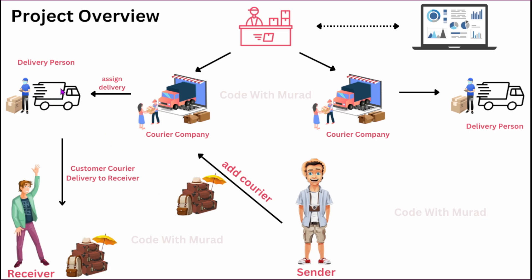When the delivery person delivers the courier to the receiver, they update the status to 'Delivered'. The admin will be able to see the complete details about courier, delivery persons, customers, and all courier entries in their dashboard.